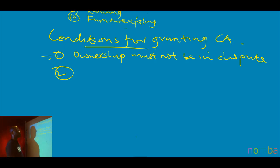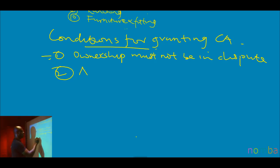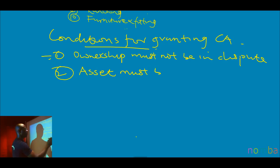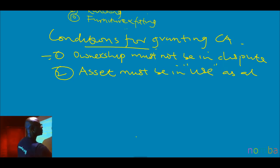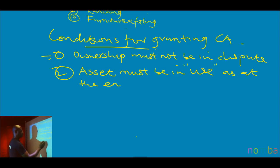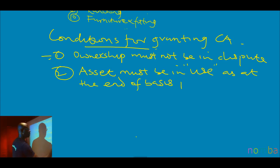The second condition for granting CA is that the asset must be in use. The asset must be in use as at the end of the basis period.